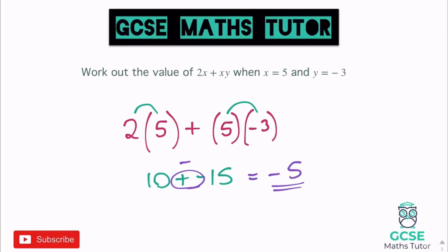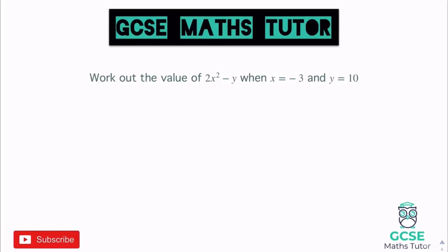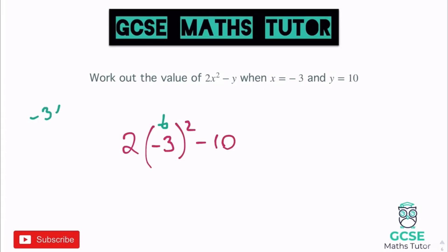Adding a negative means it becomes a takeaway, so it's 10 take away 15, which gives us negative 5. Watch out — we had to sub x in two places, both for the 2x term and inside xy. Now let's look at one with a square: work out the value of 2x² − y when x is negative 3 and y is 10. With brackets, we have 2 lots of negative 3 squared, take away 10.